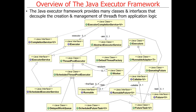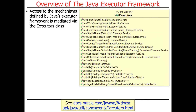So the Executor Framework provides lots of classes and interfaces. The main benefit they provide, if you step back from the trees and look at the forest, is that they decouple the creation and management of threads from the application logic and the tasks that it performs. The idea is that you're going to be able to decouple the tasks to do from the way in which threads are created and managed. The framework hides a lot of those details from you, so you can modify and change things without breaking a lot of your code.